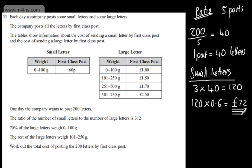So the cost of sending all of the small letters is 72 pounds. If we now look at the large letters, we have 2 parts. 2 times by 40 is going to give us 80.